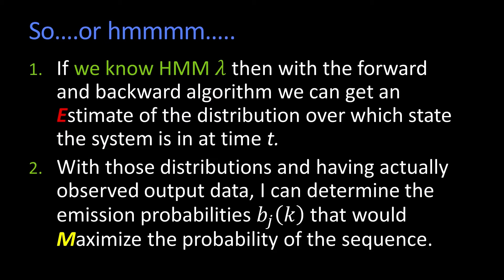Well, if you give me that distribution, and I've actually seen at every time t what was observed, then given the probability that I'm in each of the states and the observed data, I can figure out what the most likely b_j(k) is—that is, what the emission probabilities are. I pick the ones that would maximize the total observation probability.